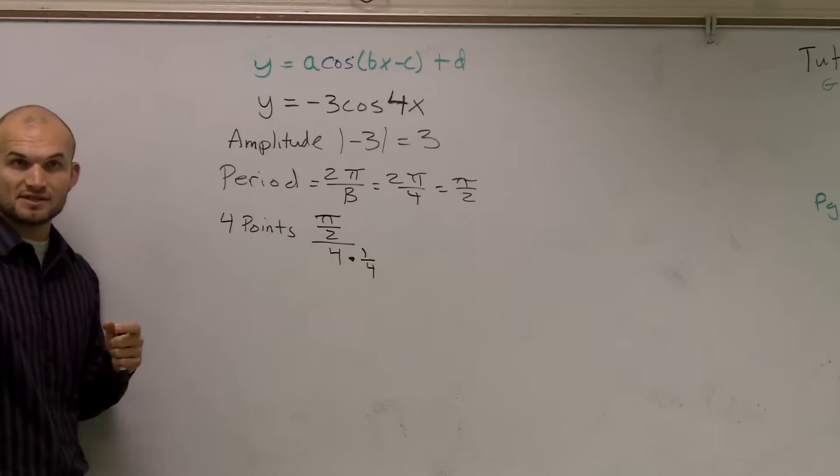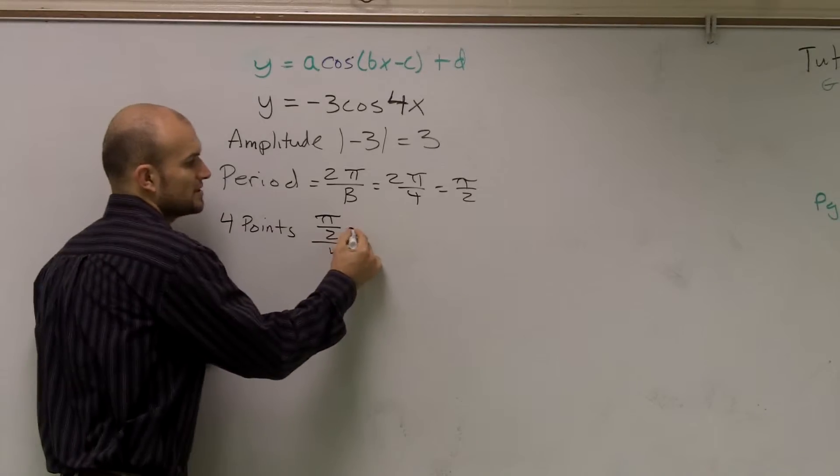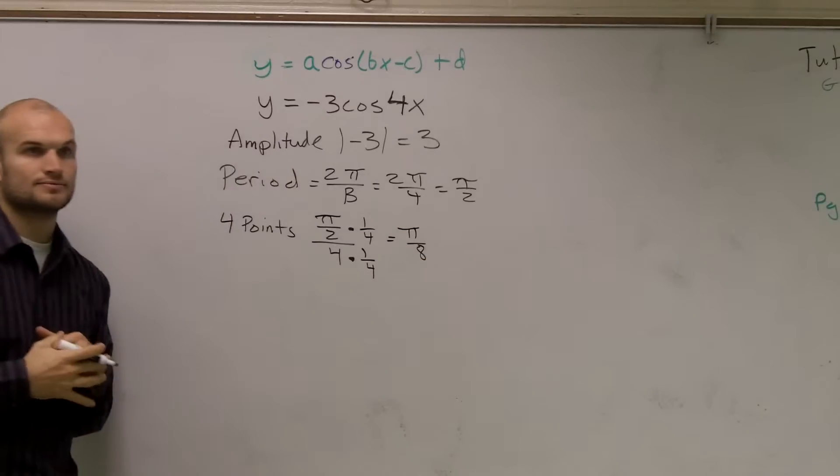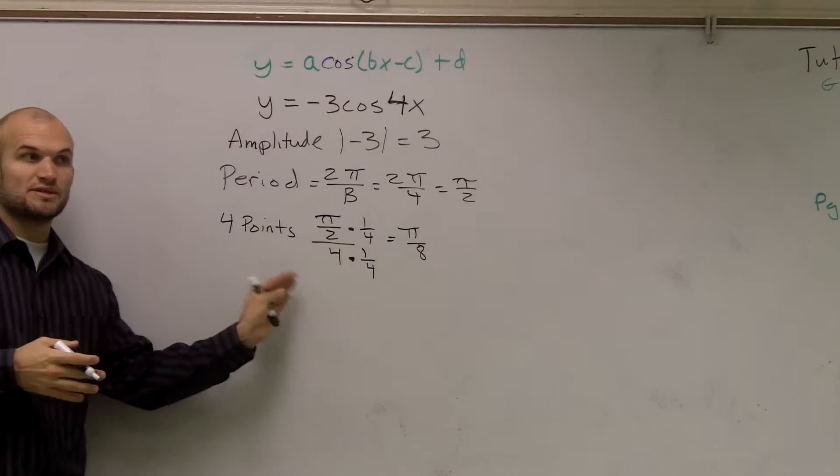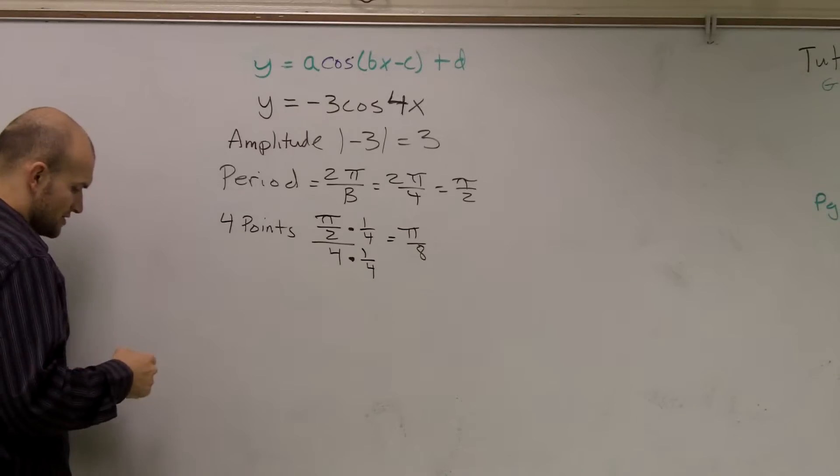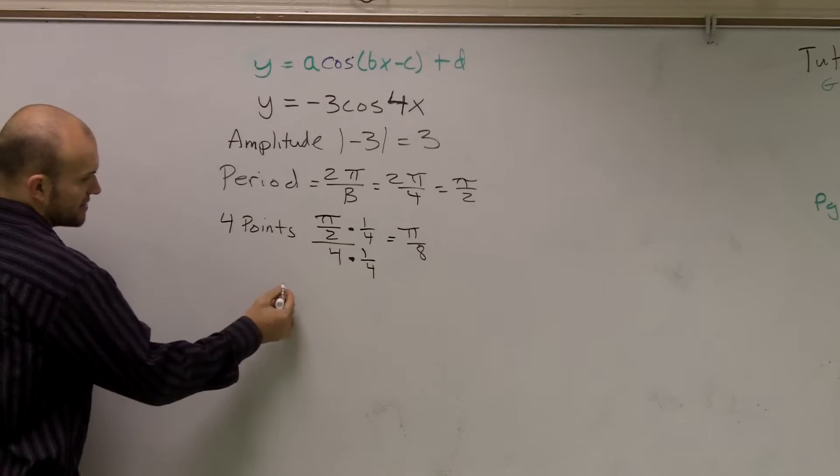4 times 1/4 is obviously 1. Multiply the reciprocal on the top and the bottom. π over 8. So that means the intervals between your important points are π over 8. So now what I'll do is I'll graph a set of axes here.